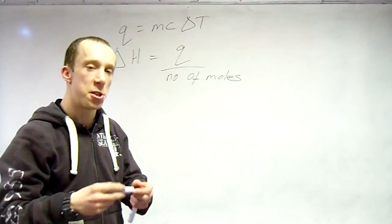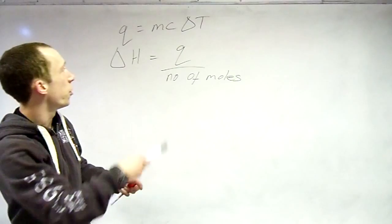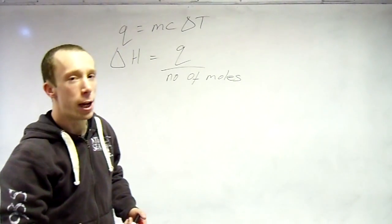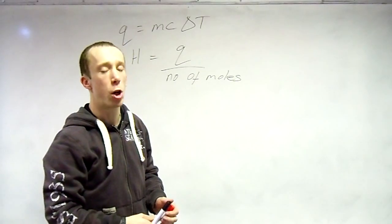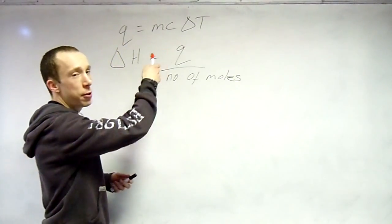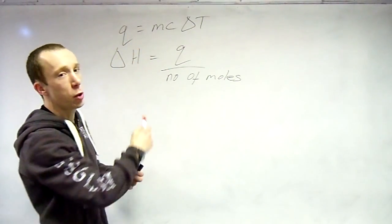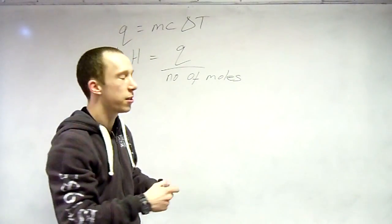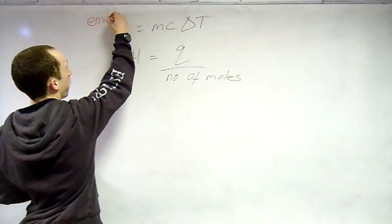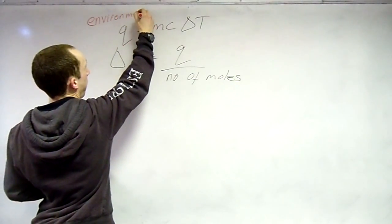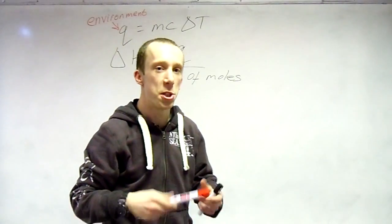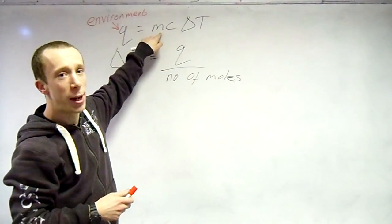And the delta H itself, so how to work that out? Once you've worked out Q, just divide it by the number of moles. Now a few things to point out with this, some of the common errors. Obviously what everything stands for first. Q, that is the energy change of the environment. Make a note of that.